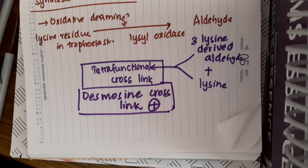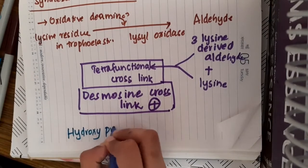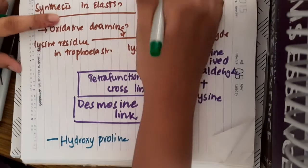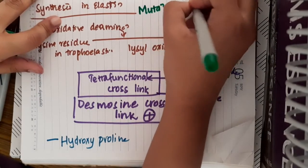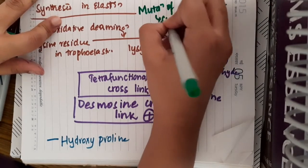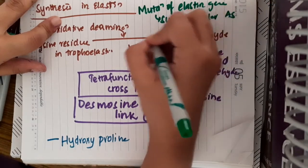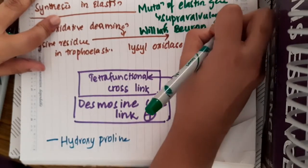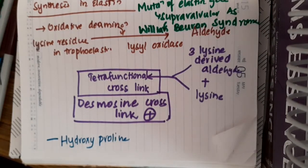Just like collagen, elastin also contains hydroxyproline. These are the important points to remember in elastin. If there is a mutation of the elastin gene, it results in supravalvular aortic stenosis, which is called Williams-Beuren syndrome. This syndrome is caused by this elastin gene mutation.